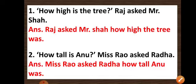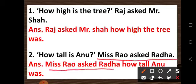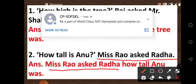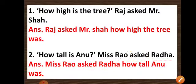Let's see the second example. How tall is Anu? Ms. Rao asked Radha. As we have seen in the first example, Ms. Rao asked Radha will come first — who said the spoken word, that we will take first, and then we will write whatever they said. Ms. Rao asked Radha how tall Anu was. Since the sentence is in past tense, the 'to be' verb form will also be in past tense. That's easy — only be very careful about this.